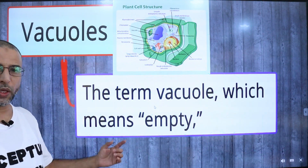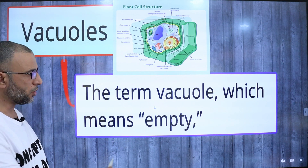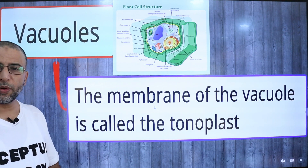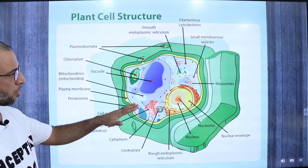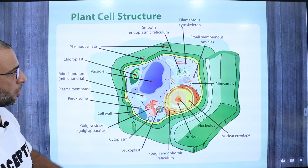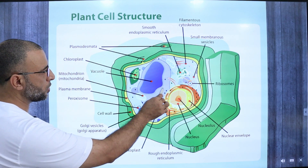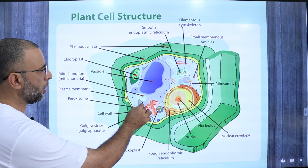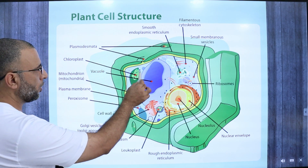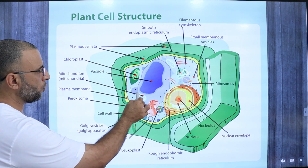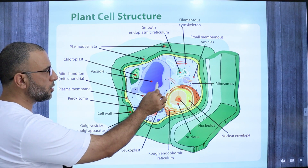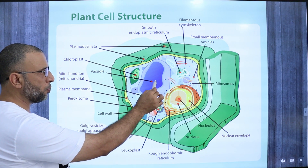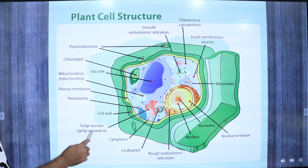The term vacuole means empty. The membrane of vacuole is called tonoplast. In a plant cell, we can see in the center there is a large central vacuole. The membrane of that vacuole is called tonoplast, and the contents which are present inside the tonoplast are called cell sap.